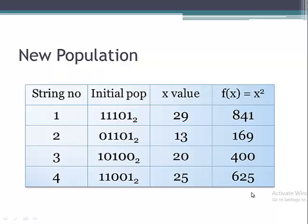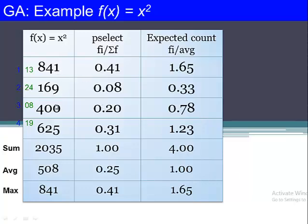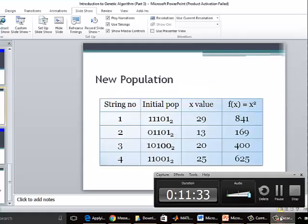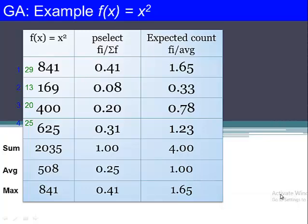These are the four fitness values of the new population. The sum of fitness values is 2,035, the average is 508, and the maximum fitness value from the four individuals is also shown. The probability of selection and expected count are calculated similarly to the previous generation, dividing each fitness value by the average.